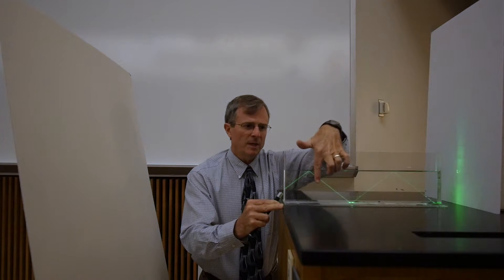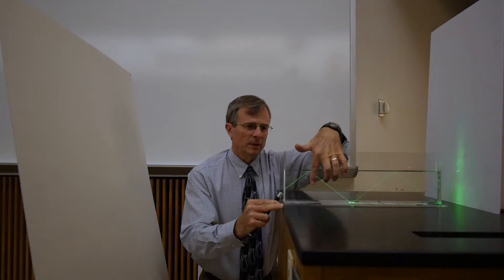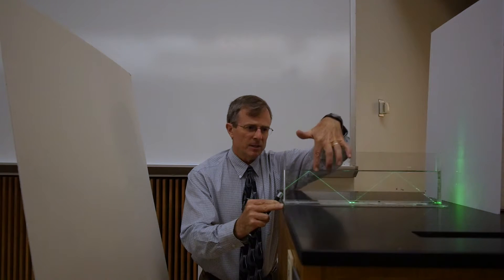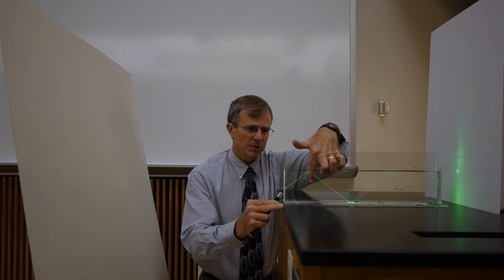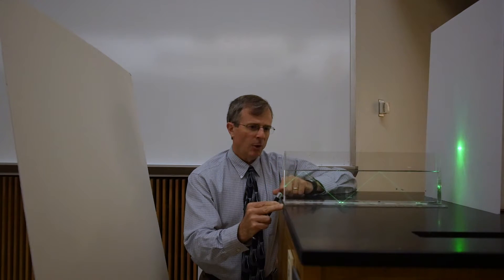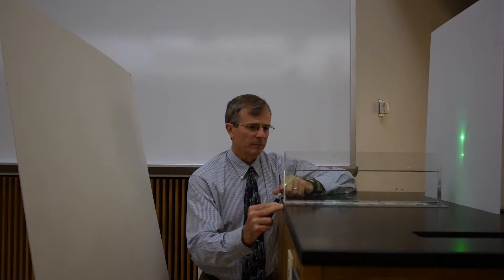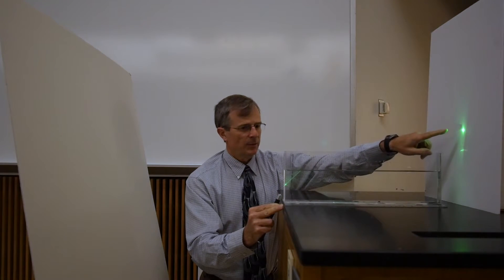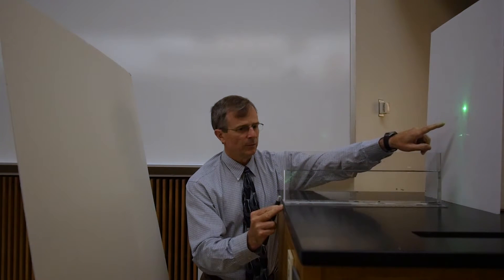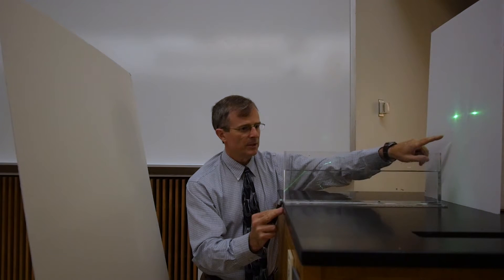And the angle that we're measuring, the incident angle, is the angle between that normal direction and the beam itself. If we lower that angle, make it smaller by doing this, then the refracted beam yet again reappears.